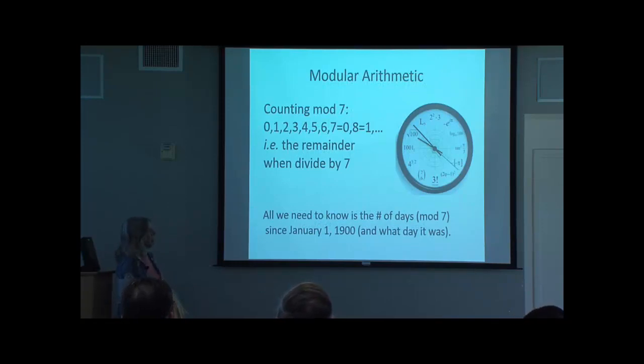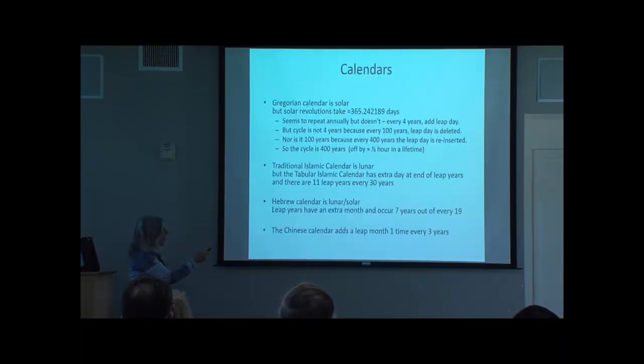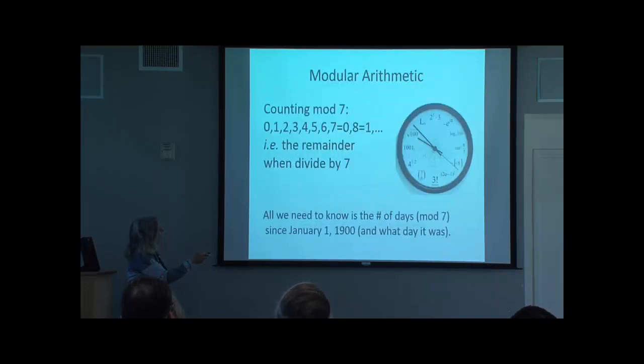So in order to do this, we need to understand modular arithmetic and, in particular, mod seven. So we have the numbers zero through six and then seven is the same as zero, eight is the same as one. It's just whatever the remainder is when you divide by seven.